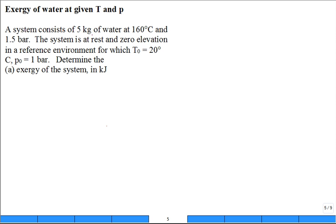A system consists of 5 kilograms of water at a given temperature, 160°C and 1.5 bar. The system's at rest and zero elevation. In a reference environment for which the dead state temperature T₀ is 20 degrees C and pressure is 1 bar.